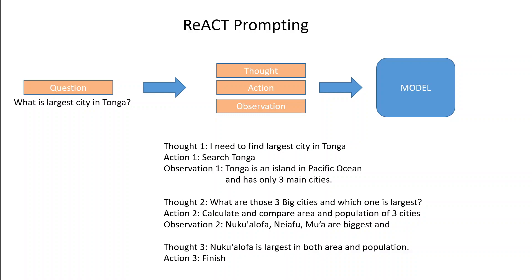It carried on with this reasoning and found the three largest cities by calculating the area and population. Then it narrowed down its search to Noko Alufa, which is a larger city in terms of both area and population. The last action was to finish, because the question was answered.